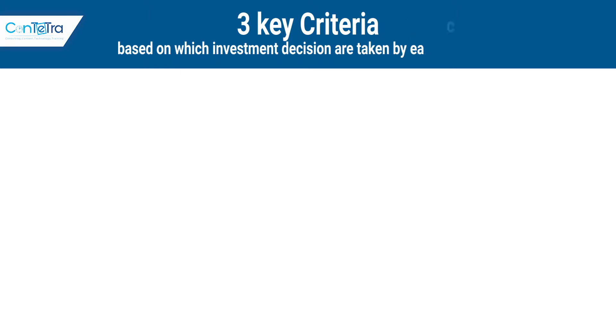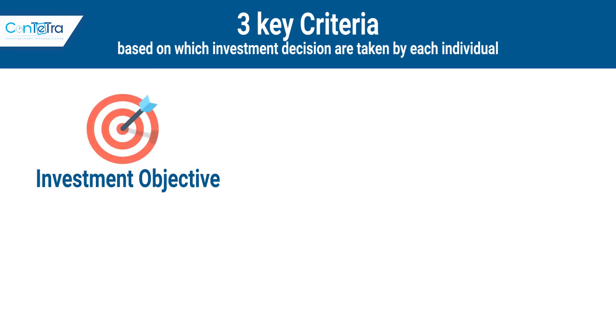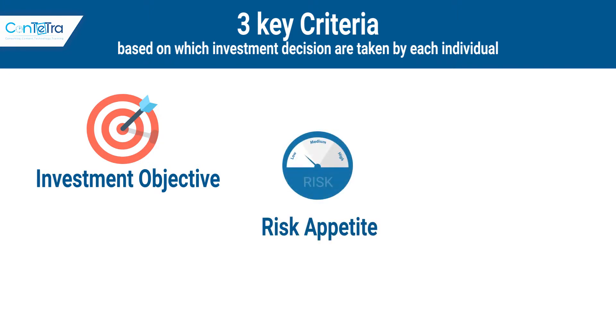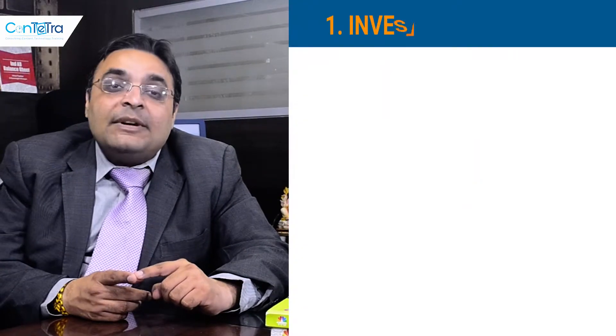So I will tell you what the criteria of investment are. This flows from the concept of financial planning, where we say there are three key criteria based on which investment decisions are taken by each individual: one — investment objective; two — risk appetite; and three — time horizon. Let us talk about each of them in a little detail.